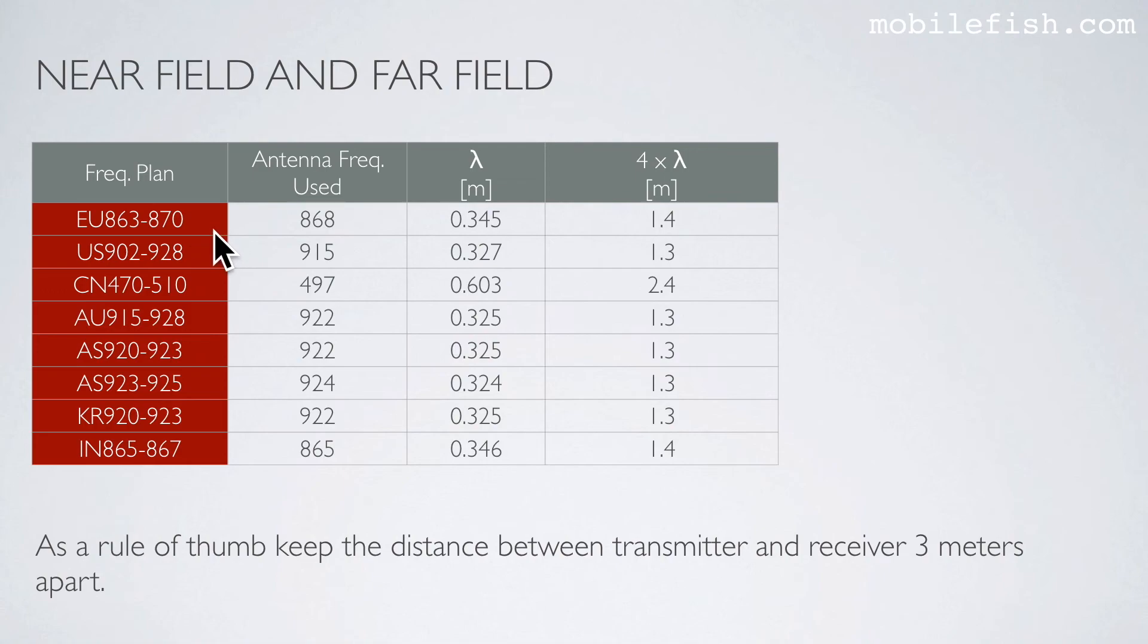In this table, you see the frequency plans, the antenna frequency you can use, the wavelengths based on these frequencies, and the wavelengths times 4. If you use this frequency plan, the distance between transmitter and receiver should be at least 1.4 meters. For this is 1.3 meters. And for this is 2.4 meters. But to keep things simple, as a rule of thumb, keep the distance between transmitter and receiver 3 meters apart.